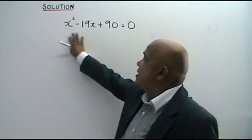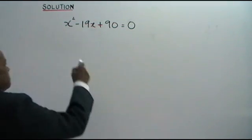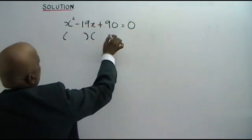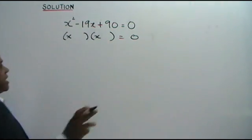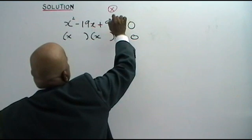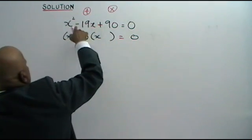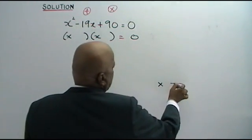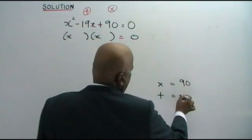Here is another example of a quadratic equation. Let's see how we solve this. As usual, if the coefficient is 1, we draw two brackets. x times x is x squared. Now think of two numbers: when multiplied together you get positive 90, and when added together you get negative 19.